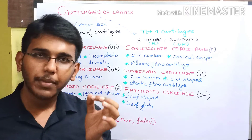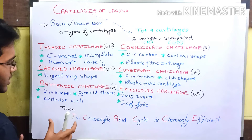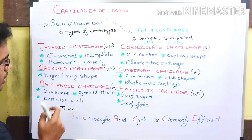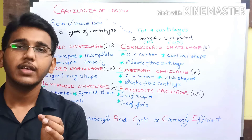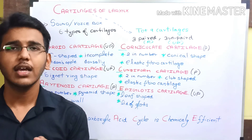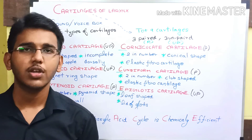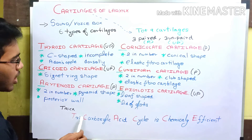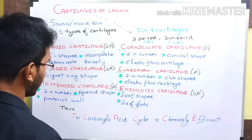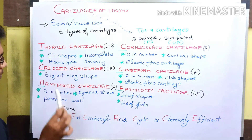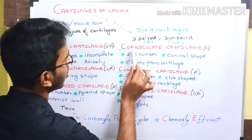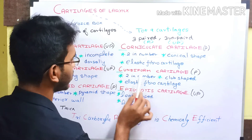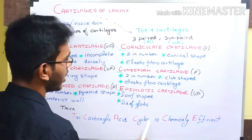Now let us see the trick to memorize the names of these 6 cartilages. The tricarboxylic acid cycle — the Krebs cycle — is a chemically efficient cycle because it produces more energy than it consumes. The mnemonic works like this: T of Tri refers to Thyroid, C of Carboxylic refers to Cricoid, A of Acid refers to Arytenoid, C of Cycle refers to Corniculate, C of Chemically refers to Cuneiform, and E of Efficient refers to Epiglottis.